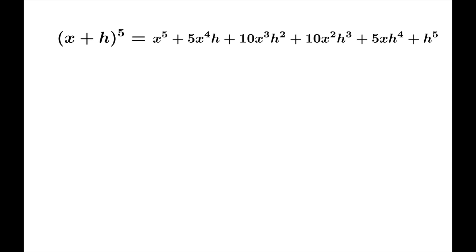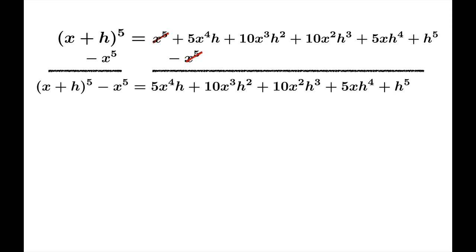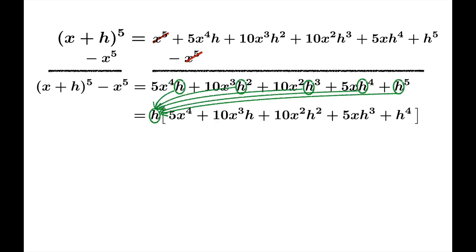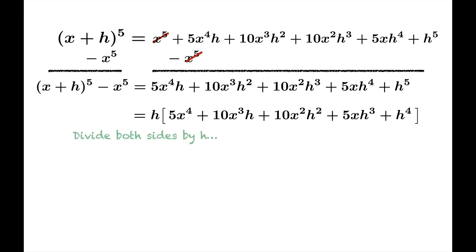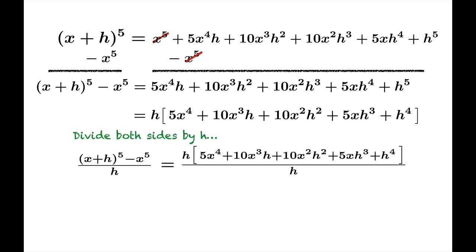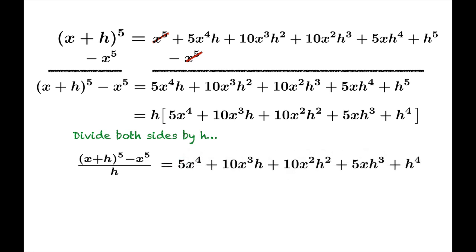Now we'll just work from here. We'll subtract off x to the fifth from both sides, yielding this equation. We will factor out the common h that appears everywhere on the right side. And now we'll divide both sides by h. A little cancellation gives us this simplified version of the right-hand side of the equation. And now we're going to factor another power of h here.